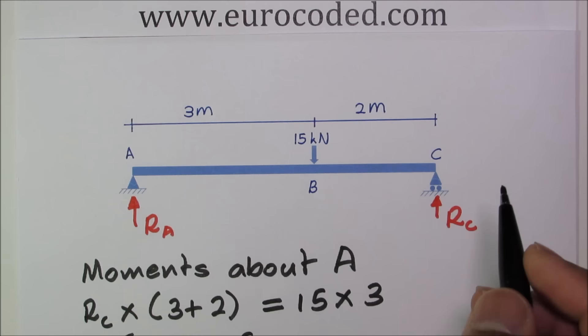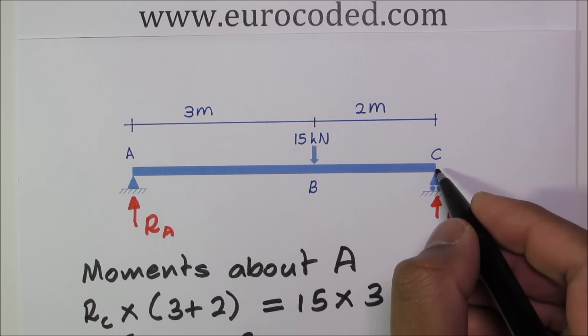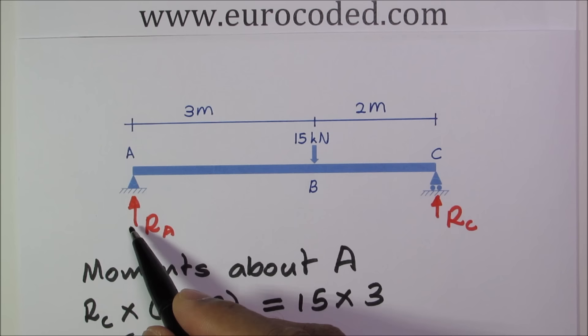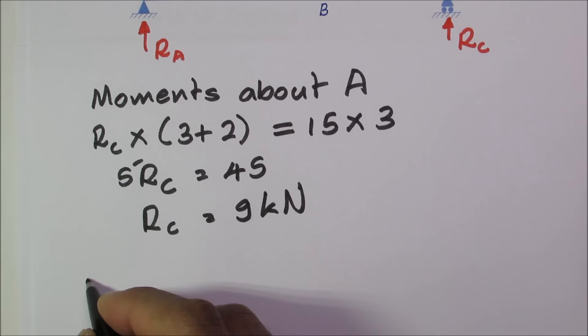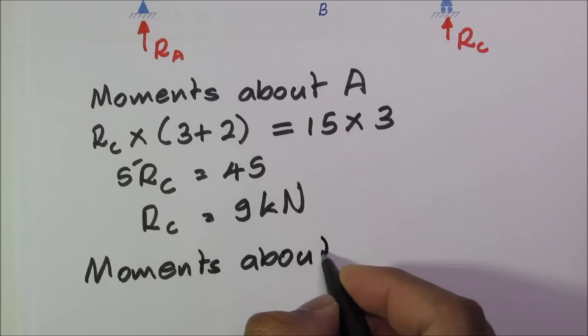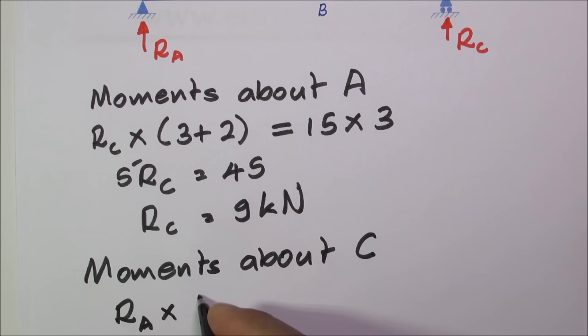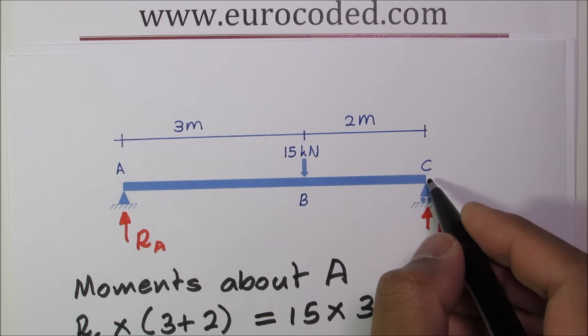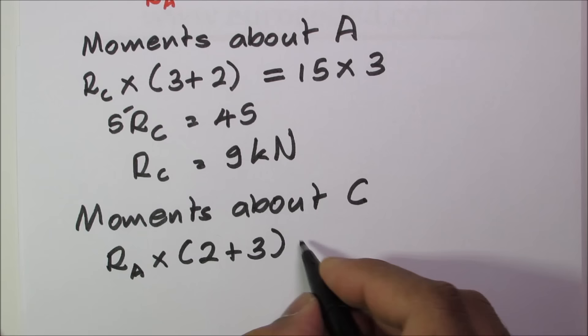Then we can take moments about C. Just like before the lever arm is 0 for reaction RC when you are taking moments about C. Hence RC has 0 moment about C. Then we have one clockwise moment due to reaction RA and the lever arm is 5 meters. RA times 2 plus 3, and we have this 15 kilonewton force causing an anti-clockwise moment about C and the lever arm is 2 meters from this point to B. This is equal to 2 times 15.